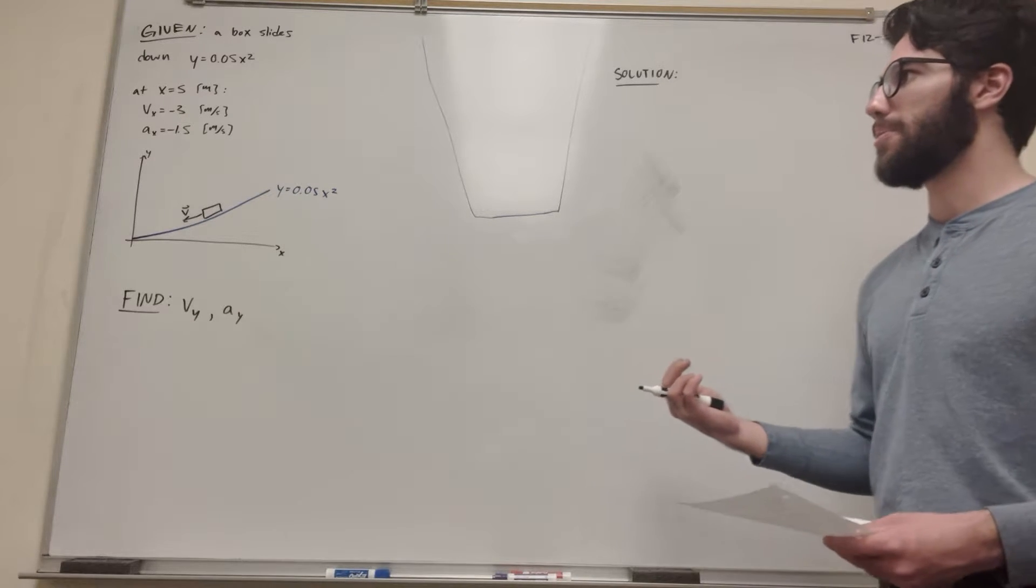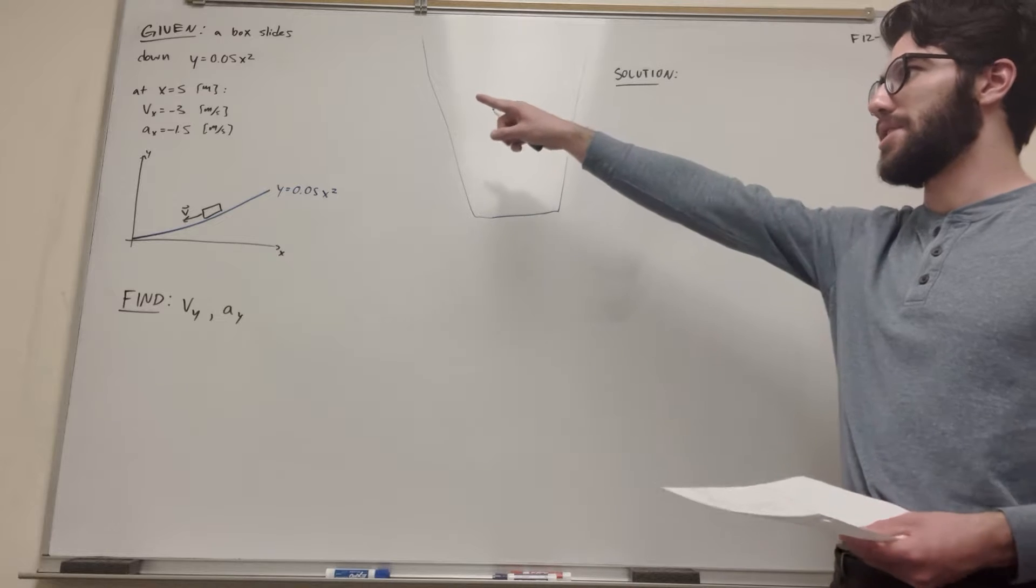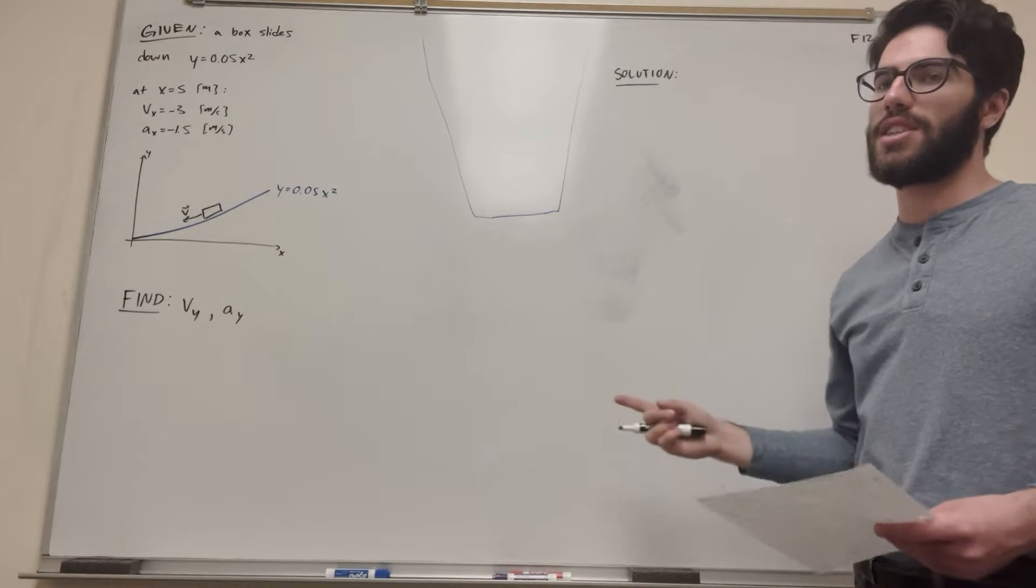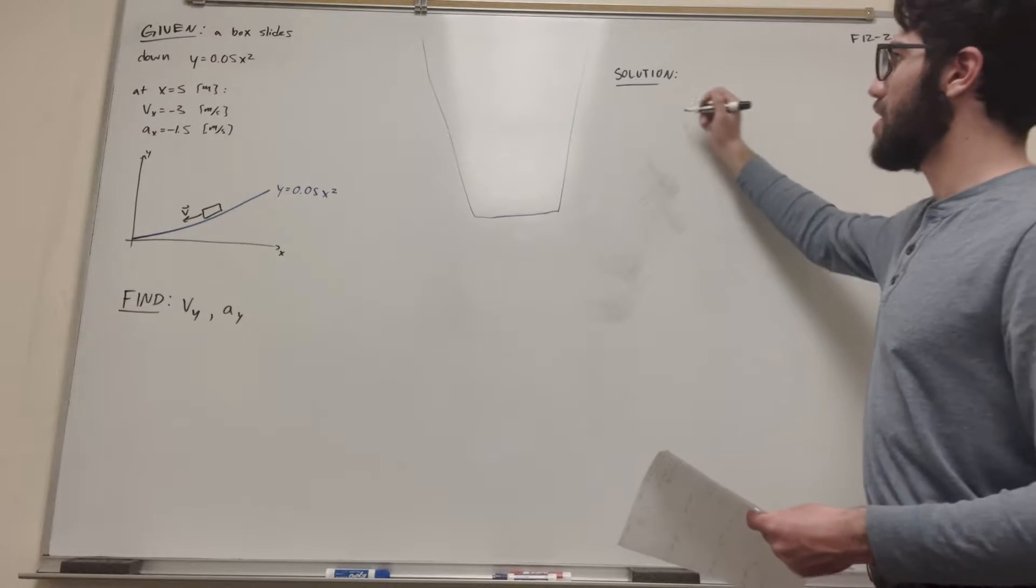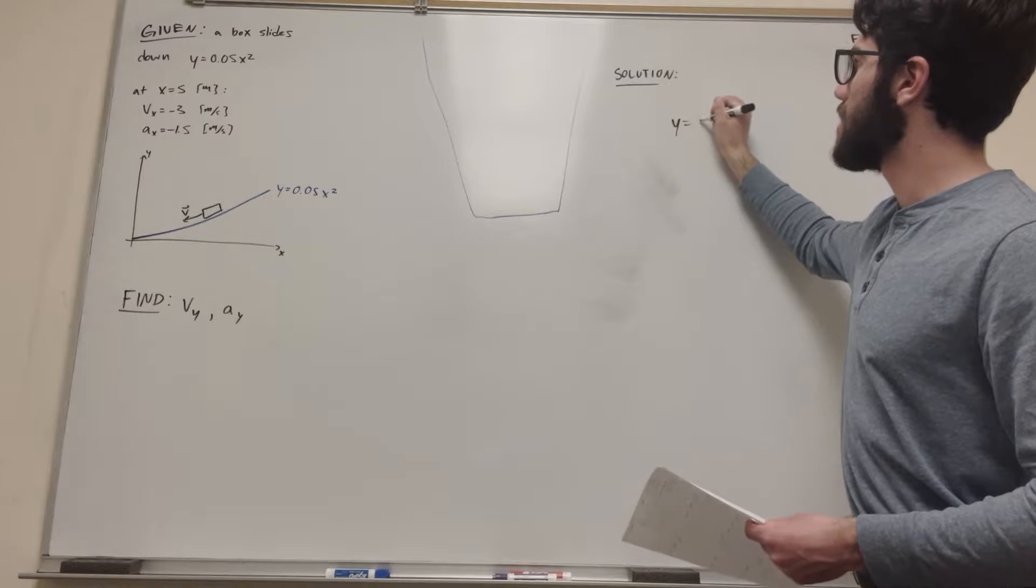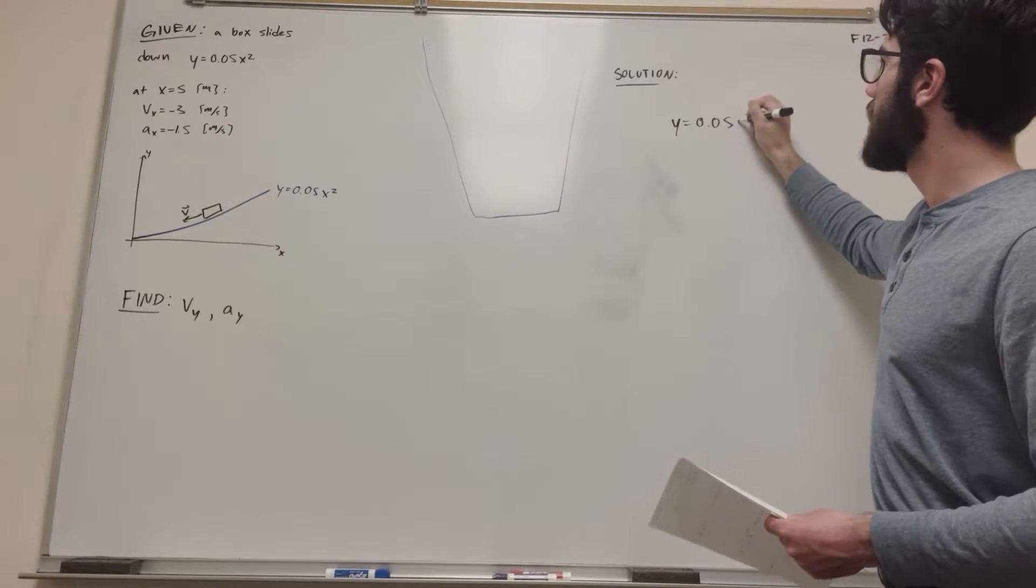So to do that, we're probably going to need to take some derivatives, because we've got a position equation and we want to find velocity and acceleration. So let's start with our equation: y is equal to 0.05x squared.